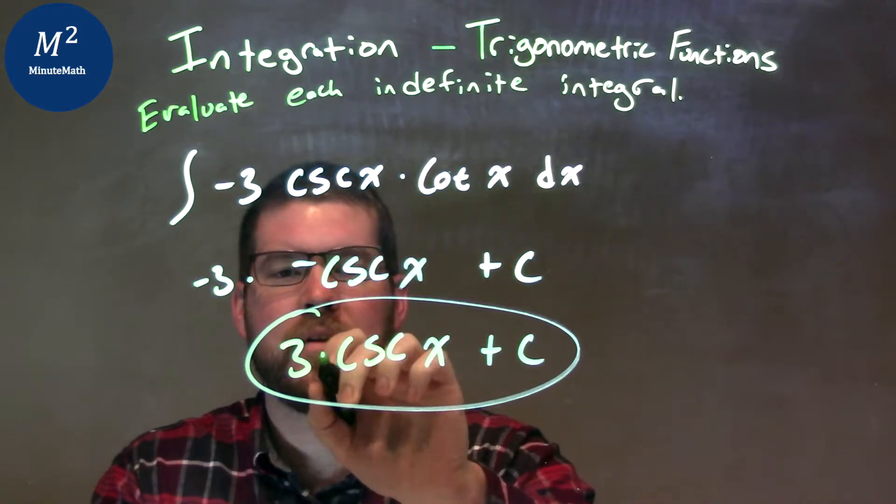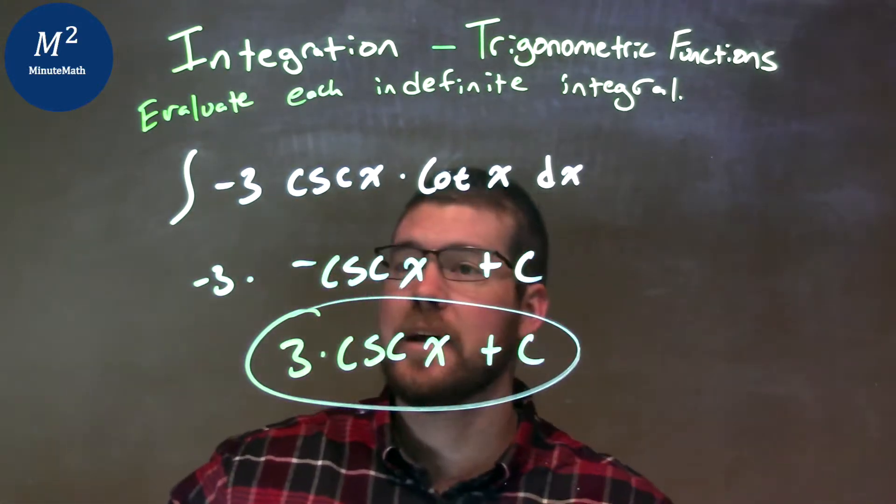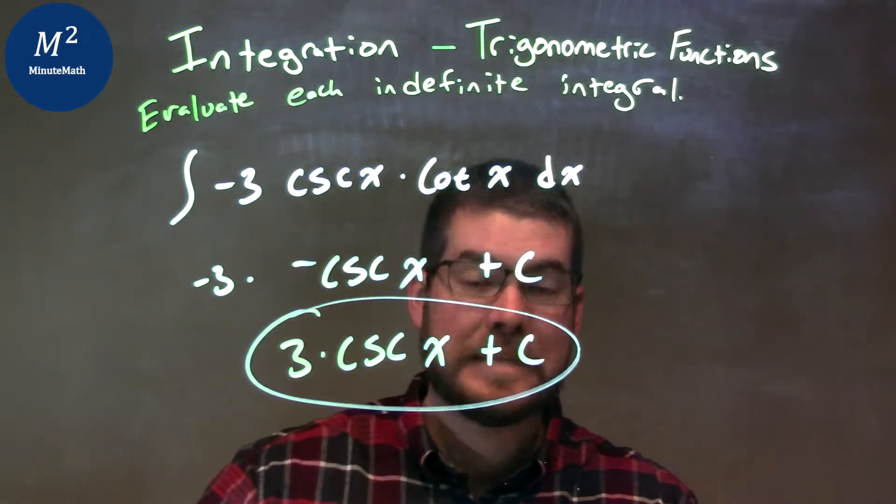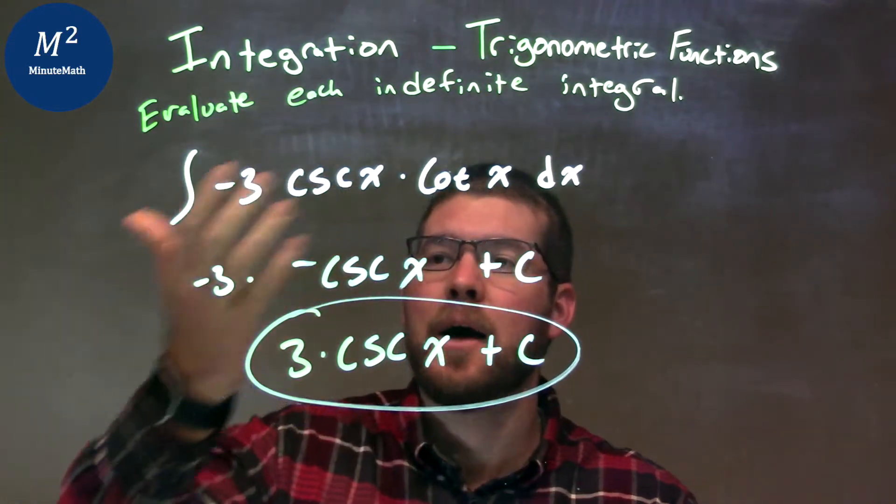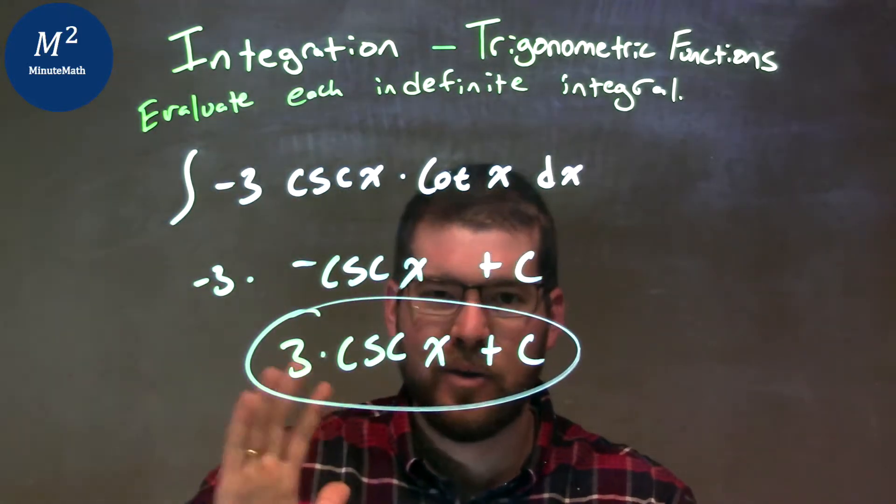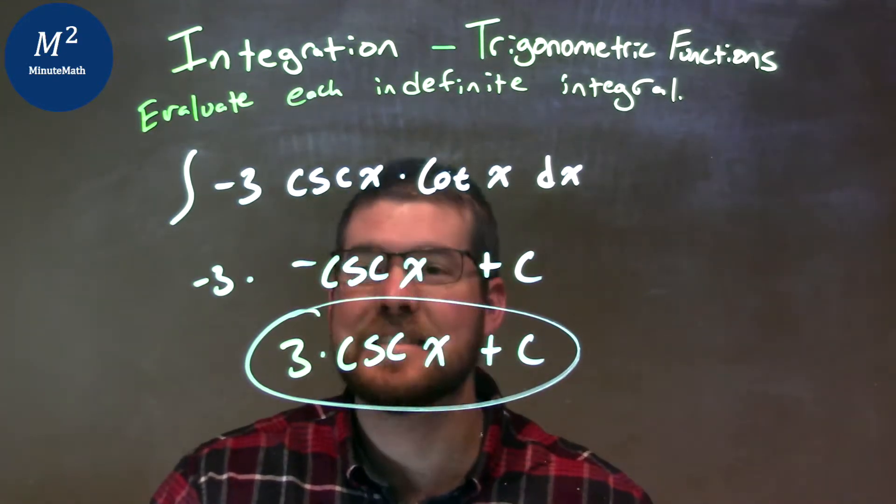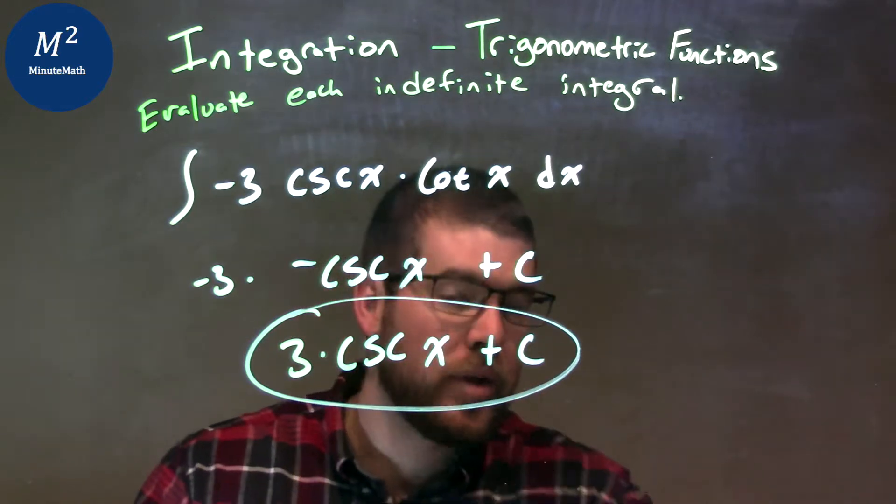Okay, so let's recap. We have the integral of negative 3 cosecant x times cotangent of x dx. I pull out my constant up front, and the integral of cosecant x cotangent of x with my trig identities is a negative cosecant x plus C.